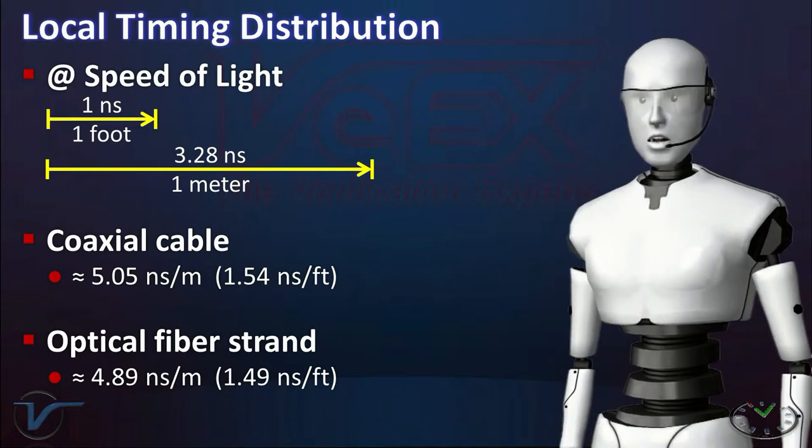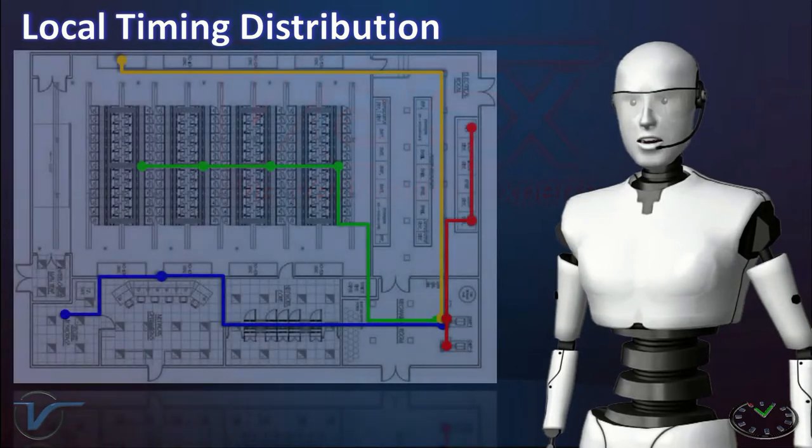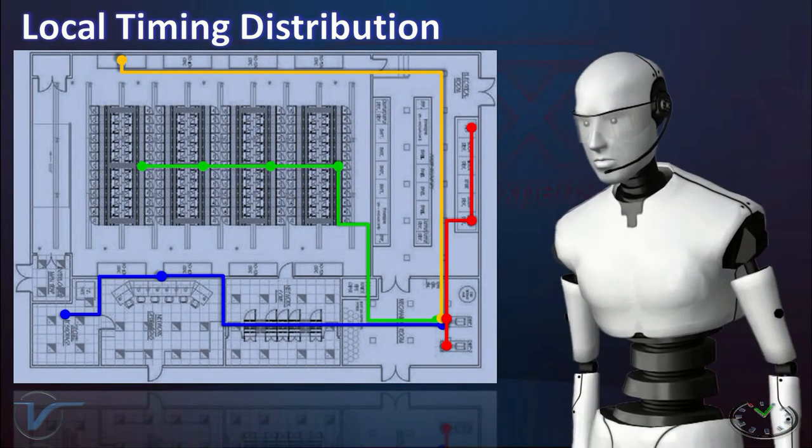Signals travel through coaxial or fiber cables at a rate of about 1.5 nanoseconds per foot. That is 5 extra nanoseconds of delay for every meter of cable. If the site was wired for frequency distribution, cable length may not have been a concern.